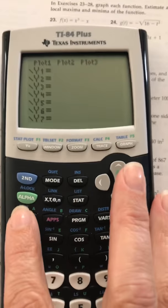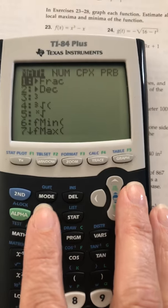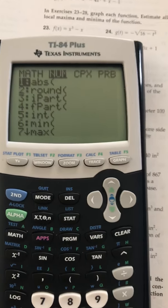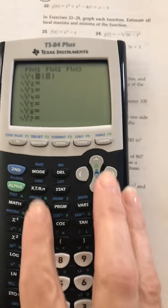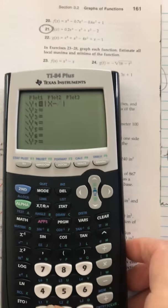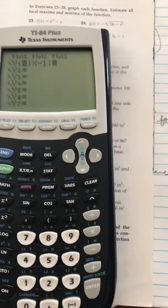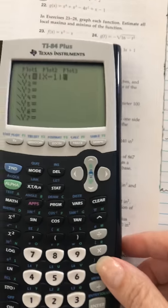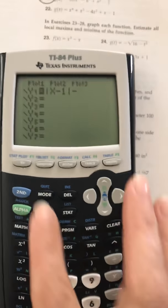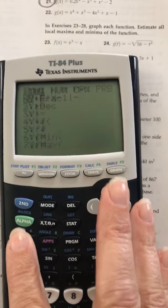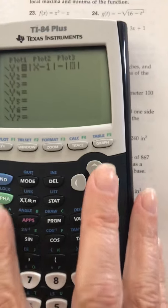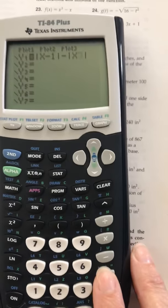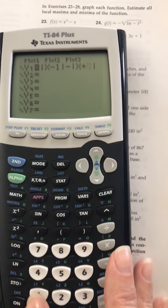Okay it's the absolute value. So to get the absolute value remember it's math num abs and it's x minus 1, x minus 1, minus the absolute value, minus the absolute value of x plus 1, x plus 1.